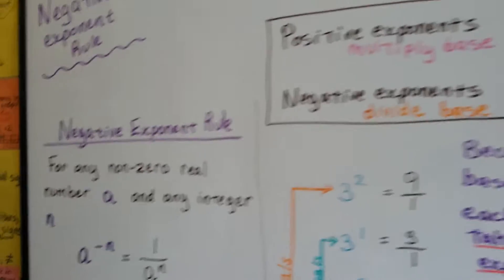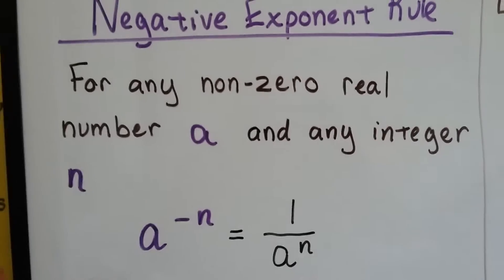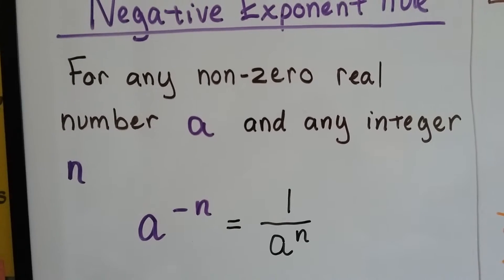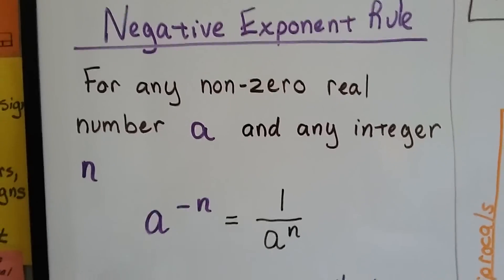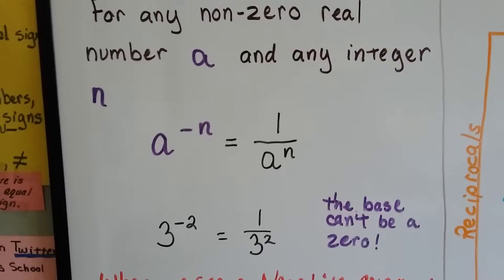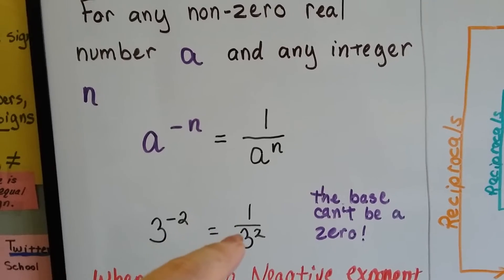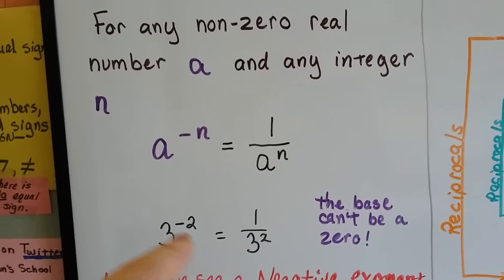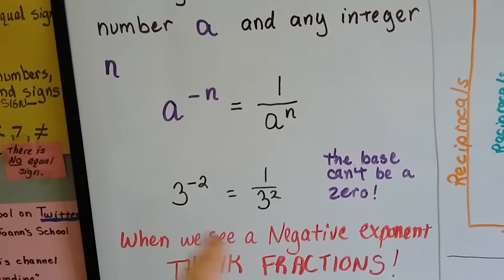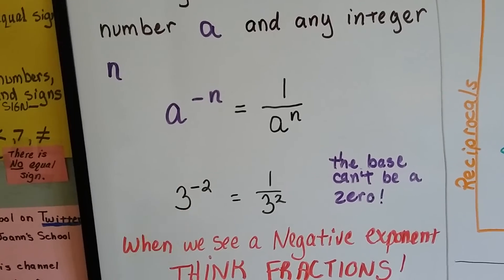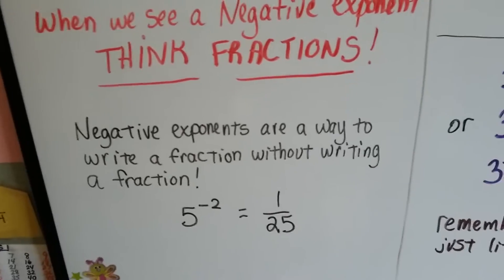The negative exponent rule says for any non-zero real number a and any integer n, a to the negative n is going to equal 1 over a to the n. What it means is if we use numbers, 3 to the negative second power would be a fraction of 1 over 3 to the second power. As soon as you see a negative exponent, think fractions. But the base can't be a zero.